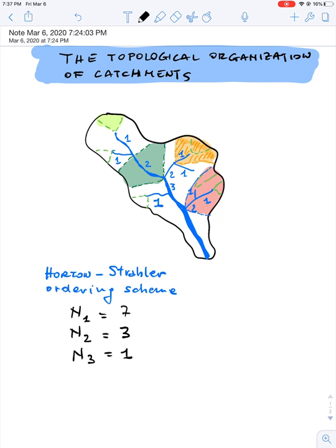So we see that the number of streams of a certain order and certain catchment is increasing with the order of the catchment—we have seven of order one—is decreasing, yes, is decreasing with the order of catchment, and we have, usually, not usually, always, just one stream of the maximum order, which is of order three.